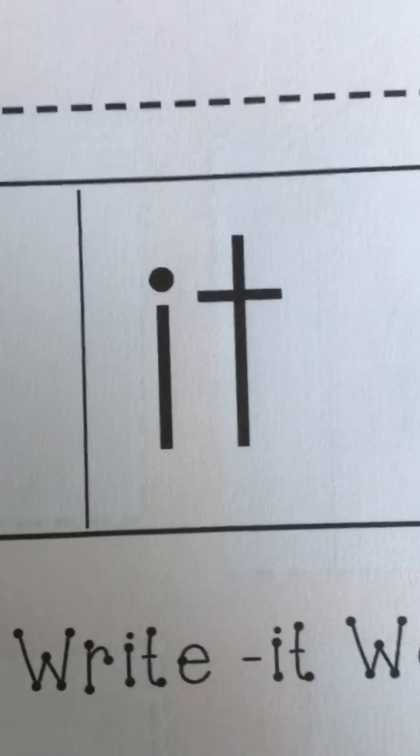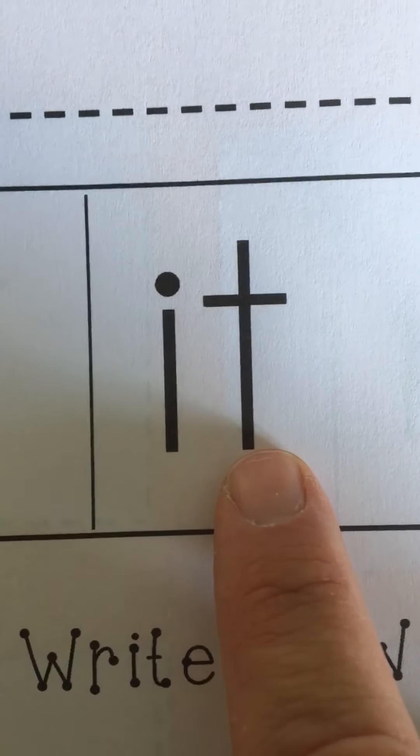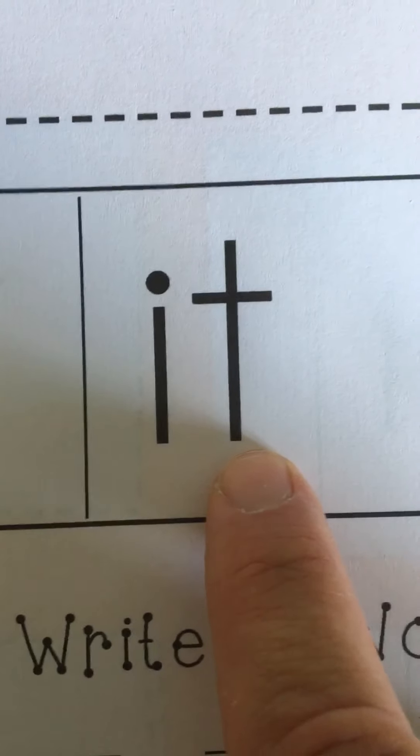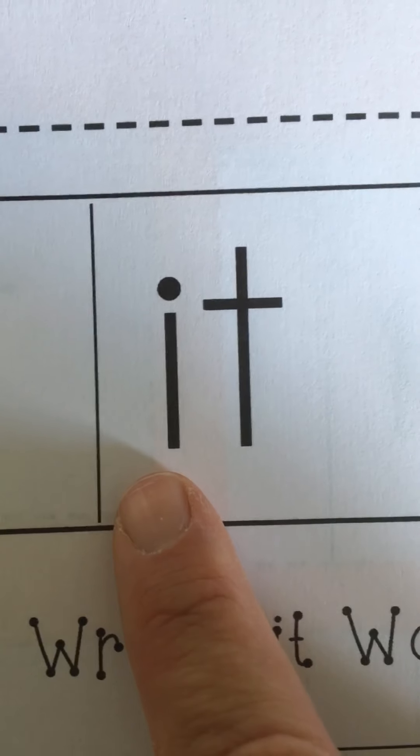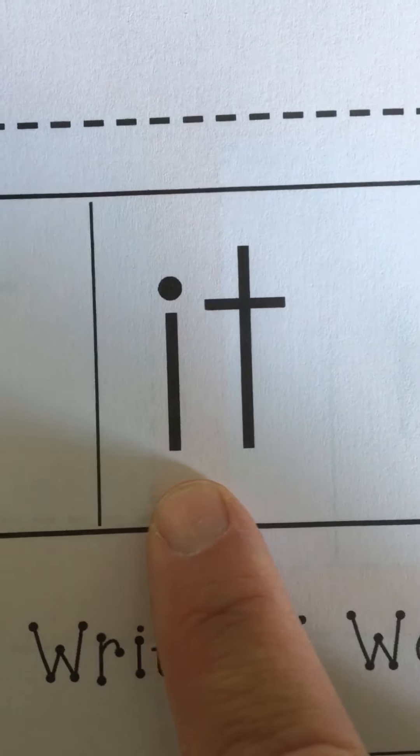Hi pandas, we're going to make I-T, it words. Let's do the sounds. I-T. Now blend them together. I-T. It.